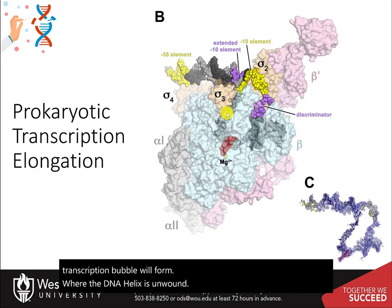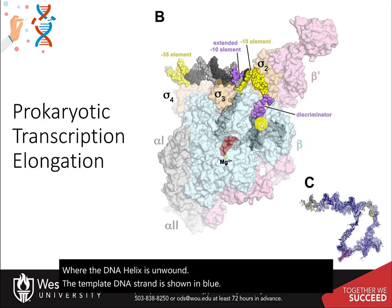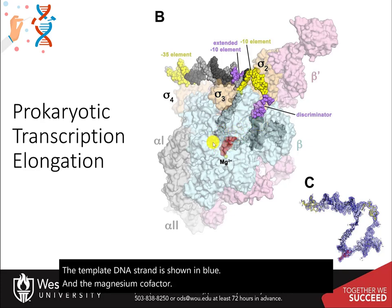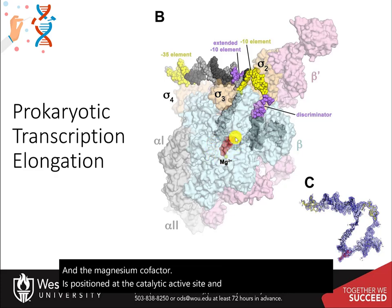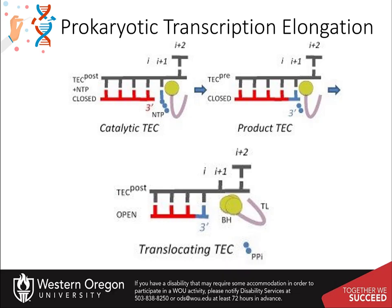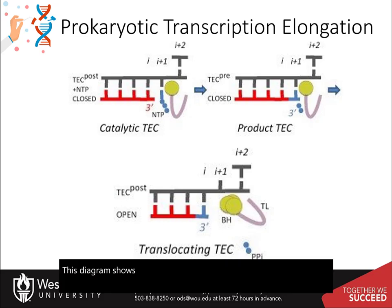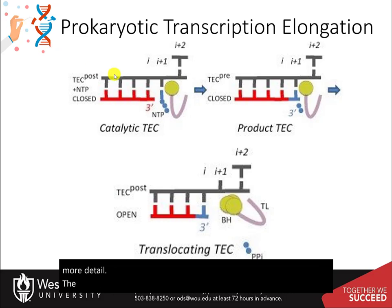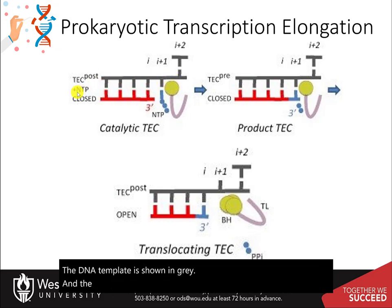The template DNA strand is shown in blue, and the magnesium cofactor is positioned at the catalytic active site and is shown in red. This diagram shows the catalytic activity of the polymerase in a little more detail. The DNA template is shown in gray and the nascent RNA strand is shown in red.